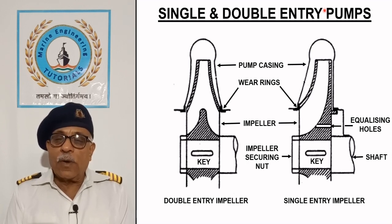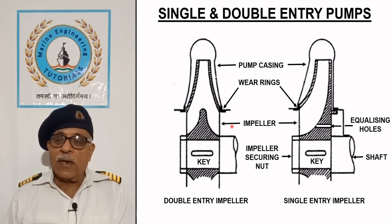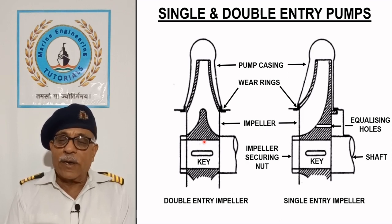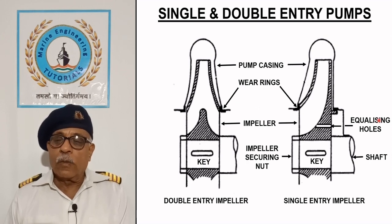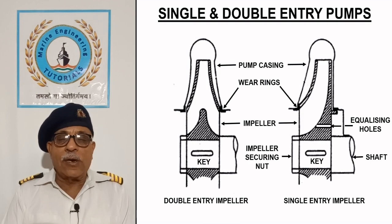Equalizing holes are not required in a double entry impeller as inlet pressure acts on both sides. The incoming liquid enters the double entry impeller from both sides and passes centrally into the volute casing for discharge. It is like arranging two pumps mounted side by side on the same shaft and working in parallel. Use of a double entry impeller increases the discharge capacity and balances the axial thrust.